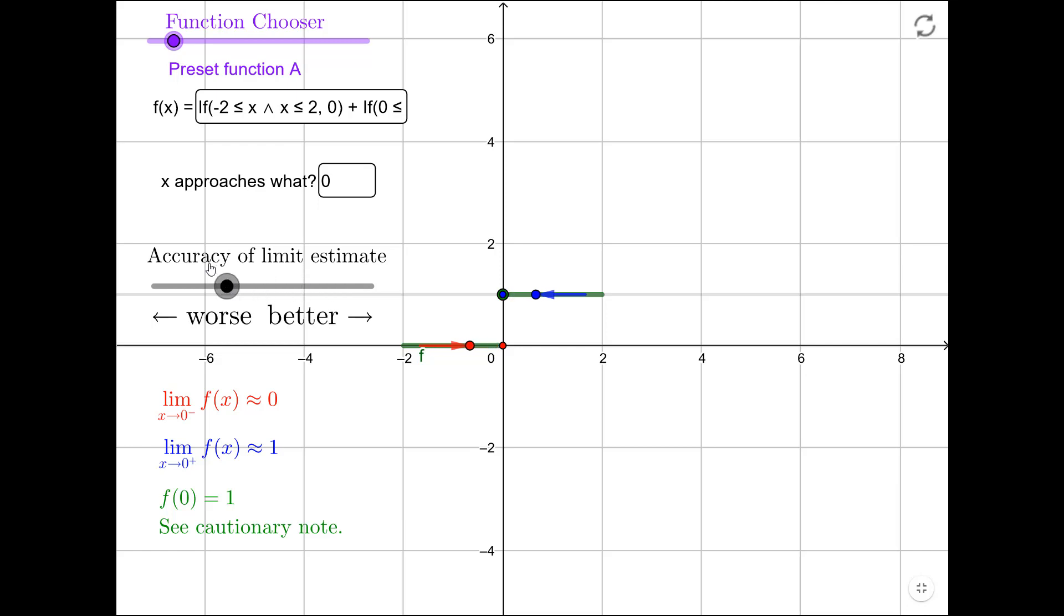And if we just extrapolate the course of where this red point is going, it appears to be targeted towards this small red point. So it looks like this function is getting closer and closer to this little red point as x approaches 0 from the left.